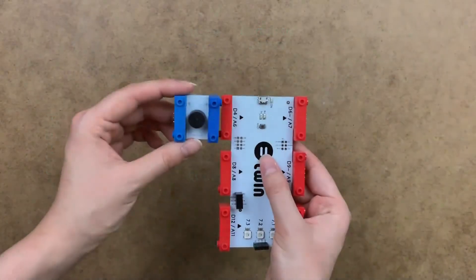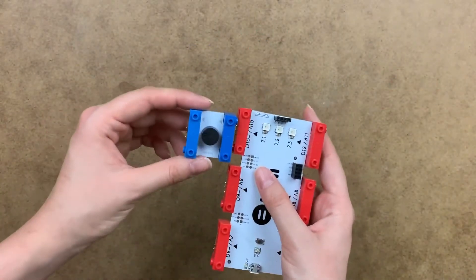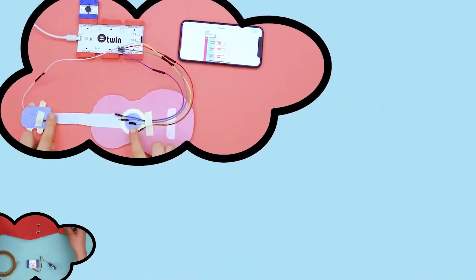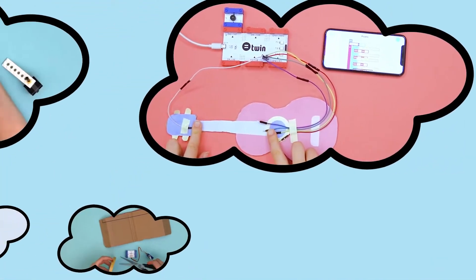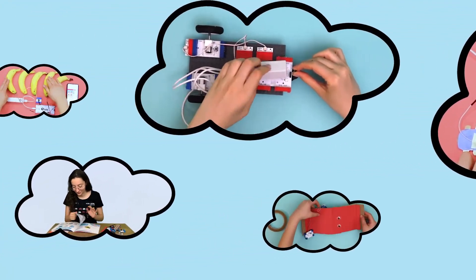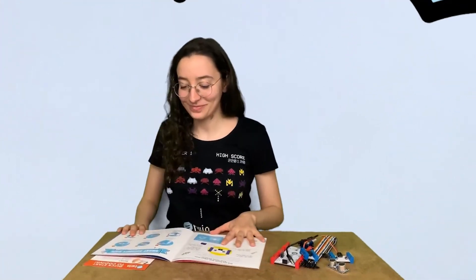As you can see, these electronic building blocks can be attached easily with magnets, so no risky process of welding. This way, children are able to build their own electronic circuits, robots and make countless projects. For example, a smart security gate.